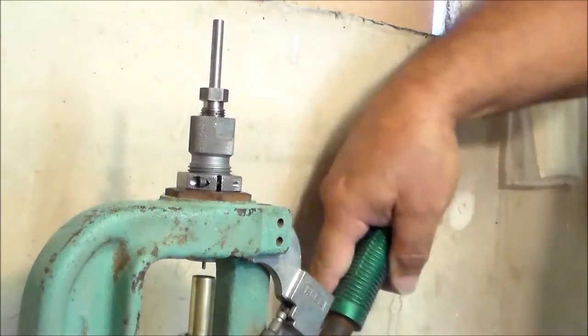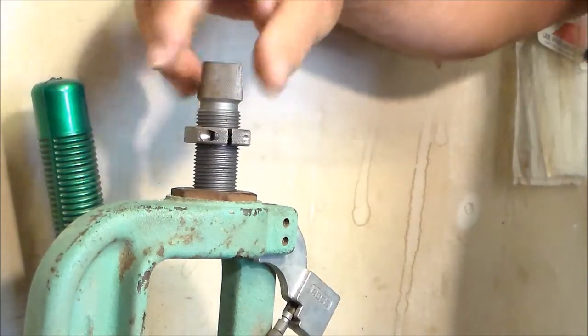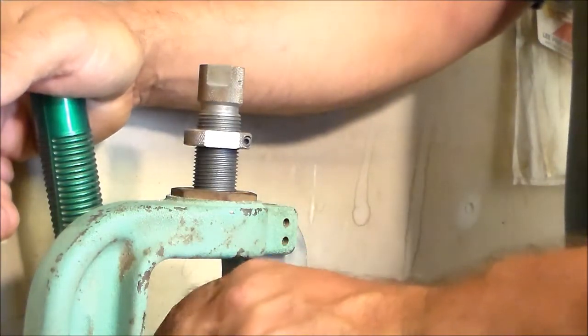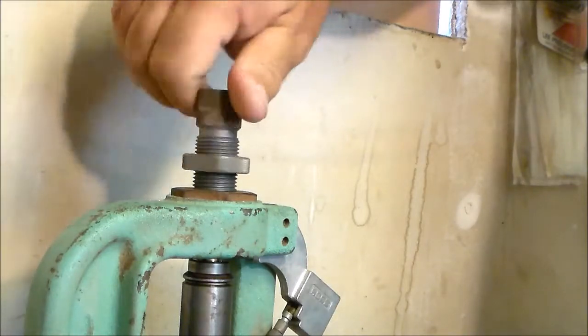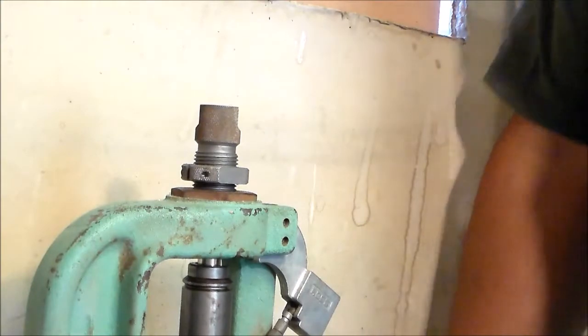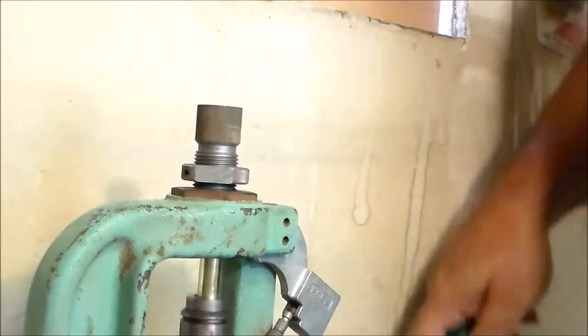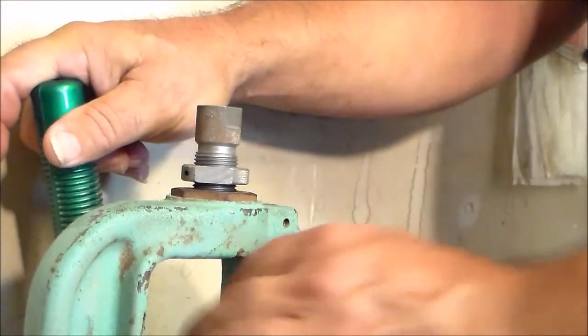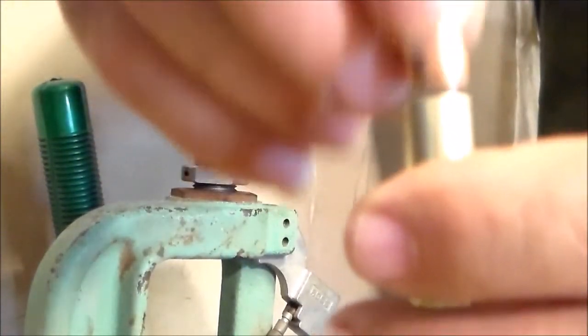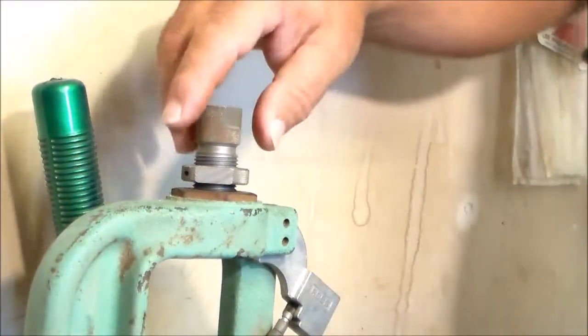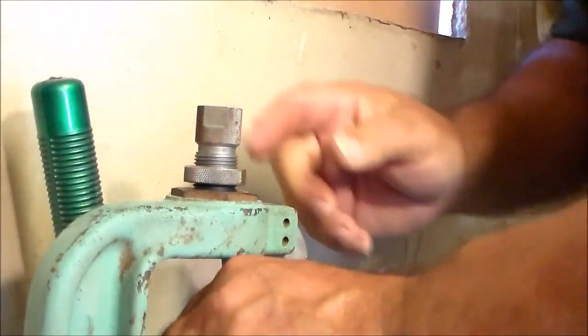To set up our expander die, we'll run it into the die a couple turns, then stop. Put your shell back into the shell plate, run it all the way up to the top. Screw down the expander all the way down until you hit the case mouth. Once you hit the case mouth, lift it all the way up and run your die down about an eighth of a turn at a time until you properly expand and bell out the end of the brass. You can see right here it's just barely taking the bullet. We need to expand it just a little bit more, so run it down another eighth of a turn or so and run it up into the die. Keep doing these steps until you have the proper bell expansion on your brass.